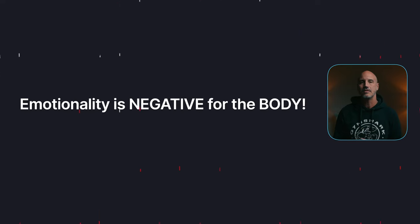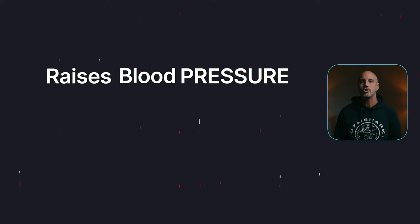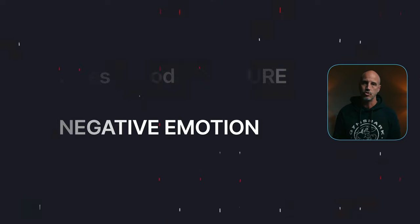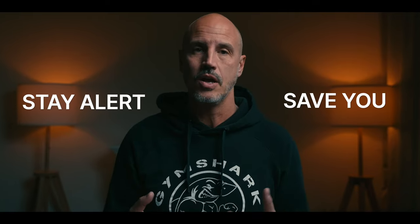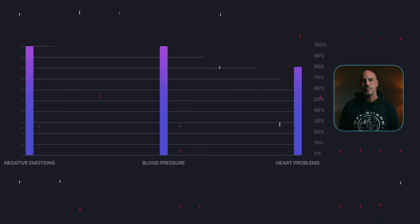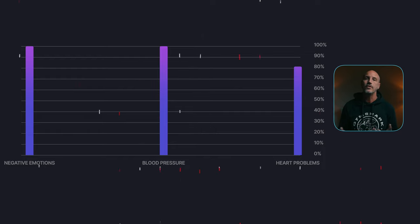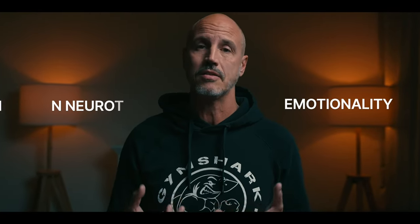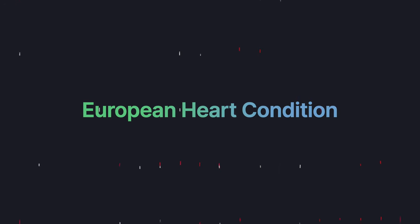As the emotion implies, emotionality is negative for the body as well. It has been documented in data that negative emotions raise your blood pressure as your body tries to stay alert and save you. If you are high in negative emotions, you will have high blood pressure more often, which takes a toll on your cardiac system including your heart. There is data showing that being high in neuroticism and emotionality shortens one's life.